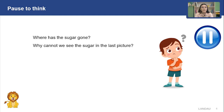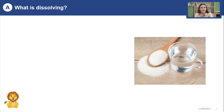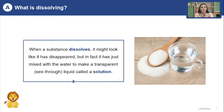Why can't we see the sugar in the last picture? The sugar has dissolved in water. Dissolving is the process of mixing substances in water. When a substance is added to water, it seems to disappear, but actually it is mixed in water and creates a solution, which is a transparent liquid.